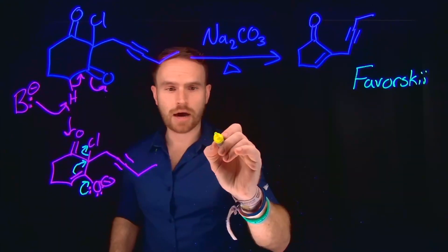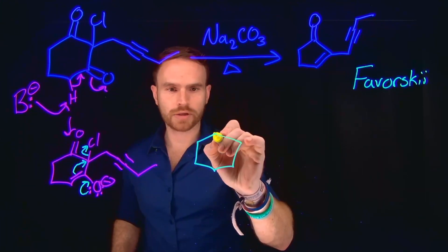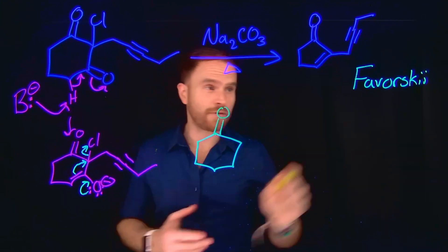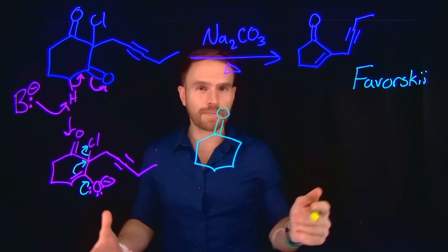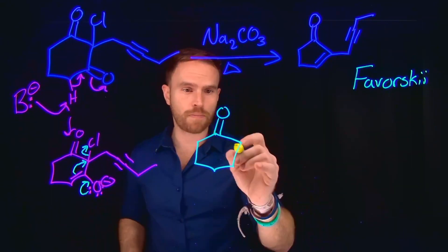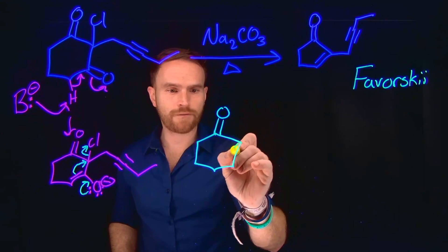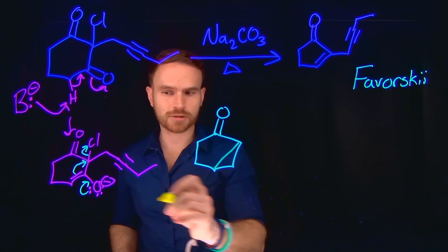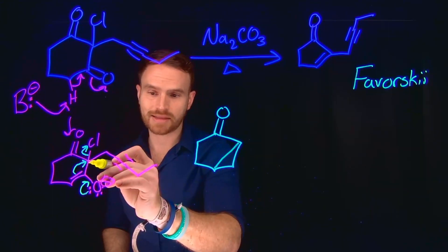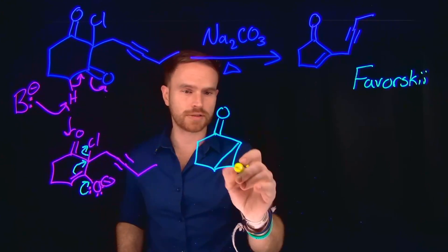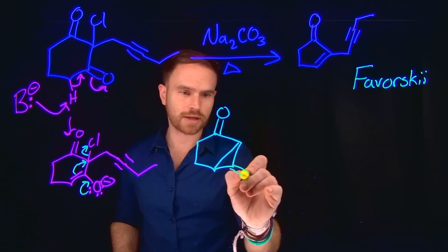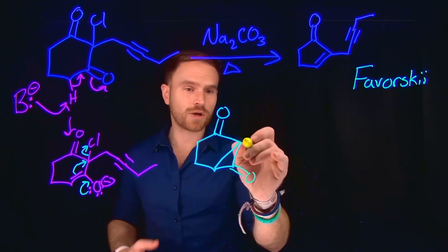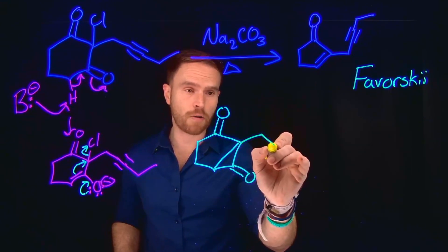And this is actually how we form what's known as a cyclopropanone. So remember, previously I mentioned that Favorski rearrangements typically follow some sort of cyclopropanone formation. And now we have formed a three-membered ring at this position, where this carbon attacked this carbon through these pi electrons, and then now we regenerated our ketone at this position, which is what's known as a cyclopropanone.